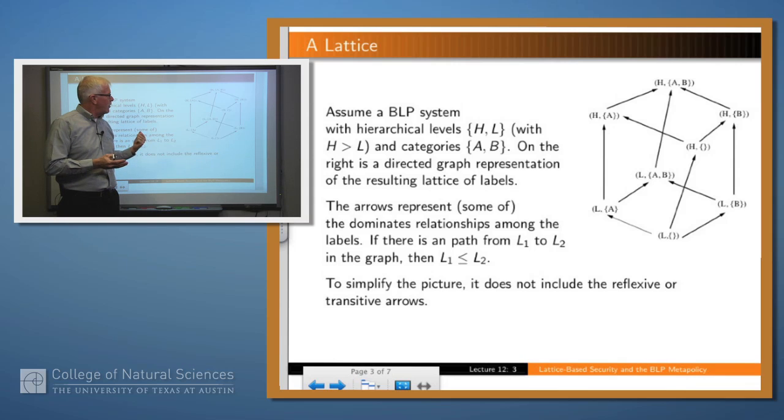So, for example, if an arrow goes from one label to another, X to Y, what that means is that Y dominates X. And so I didn't draw all the arrows in this because the diagram would have been particularly messy. In particular, I left out the reflexive arrows, so each level is able to interfere with or send information to itself or dominates itself is another way of saying that.